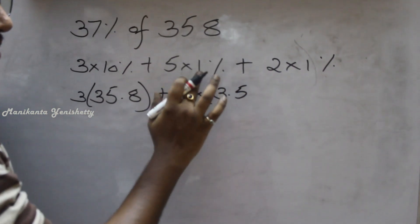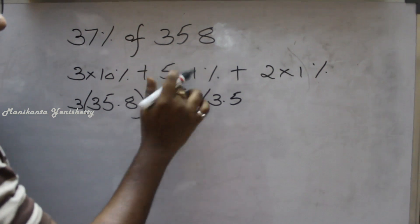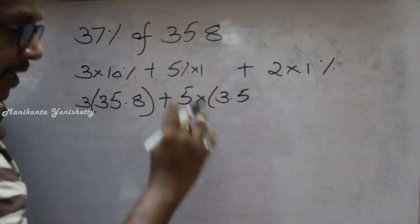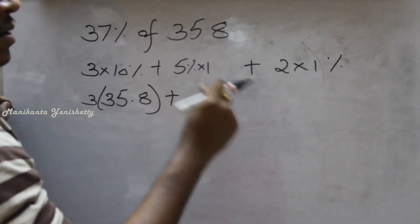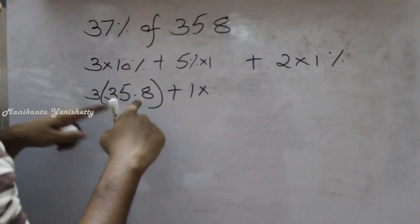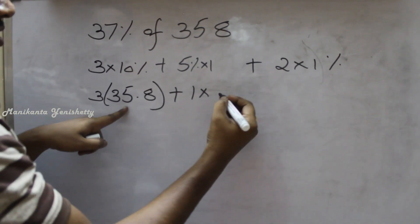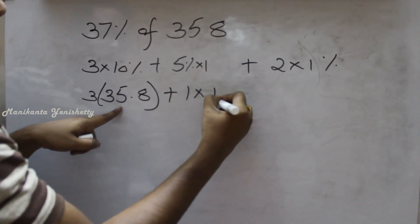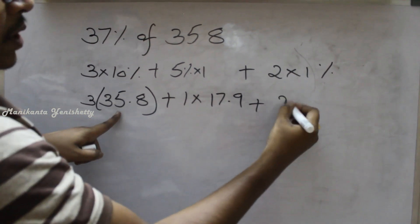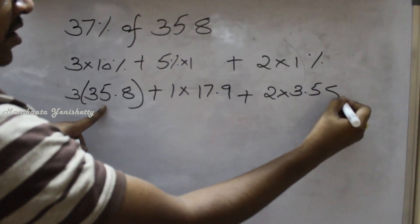This is nothing but 5 into 1%, which is 5% into 1. 1 into 5% is nothing but 10% by 2. This is nothing but 1 in 1. 2 sevens are 14, 2 nines are 18.